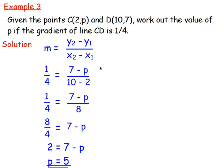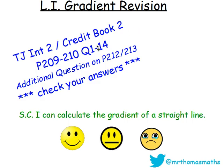That is the questions then for this review of Straight Line, the gradient revision. What I'd like you to try now is in the intermediate 2 slash credit book from TJ is to have a go at page 209, 210, questions 1 to 14. If you do them, which you should be able to do quite quickly, there are additional questions. There's more revision on page 212 and 213. Make sure that you check your answers as you go through it. The answers are all at the back. And success criteria, I can calculate the gradient of Straight Line. Think about how well you're answering these questions here.